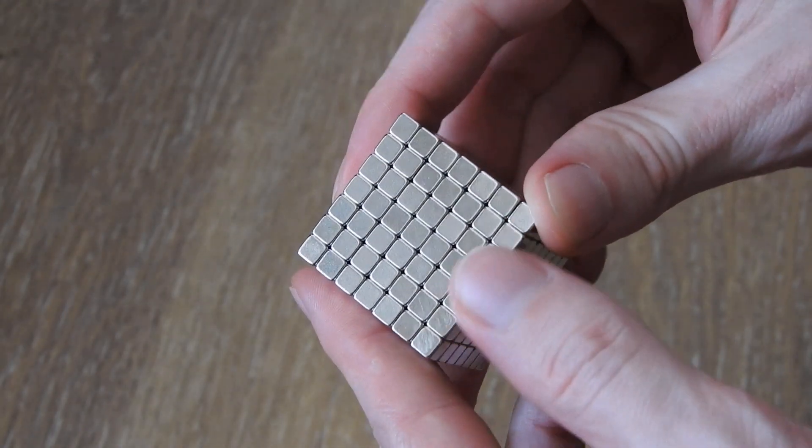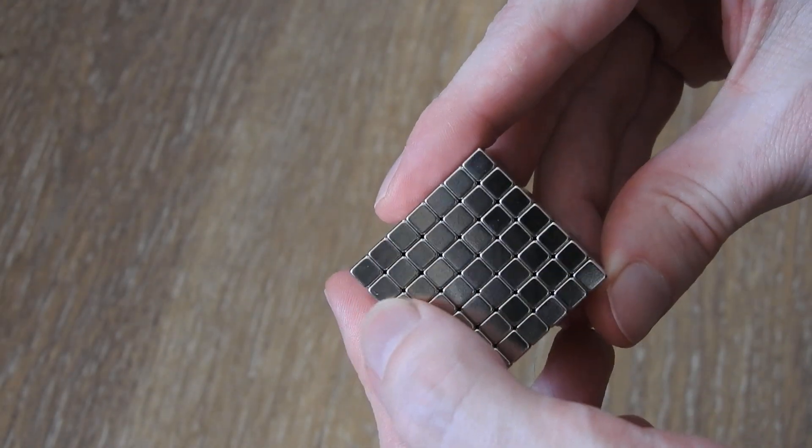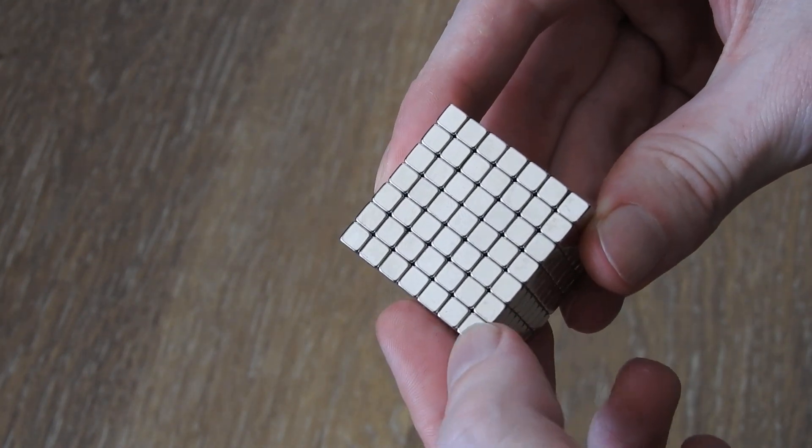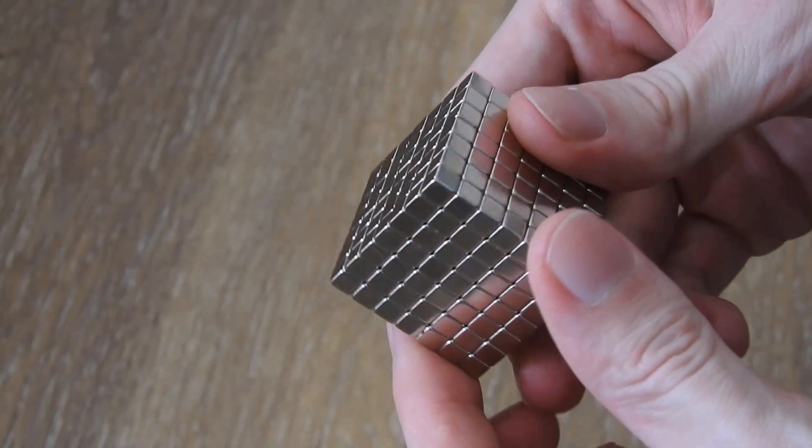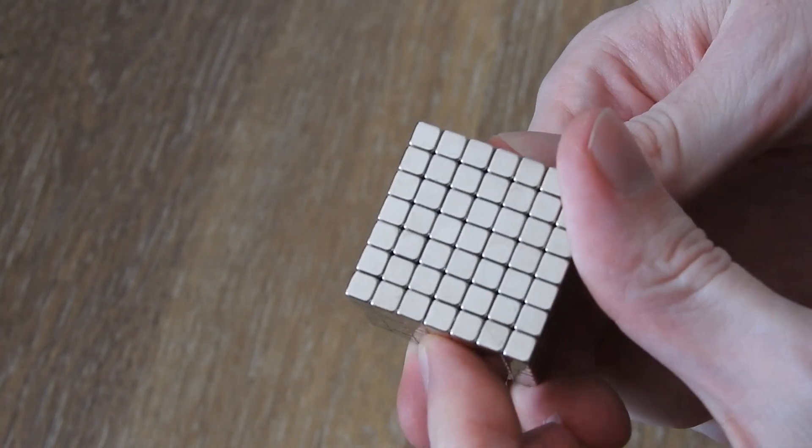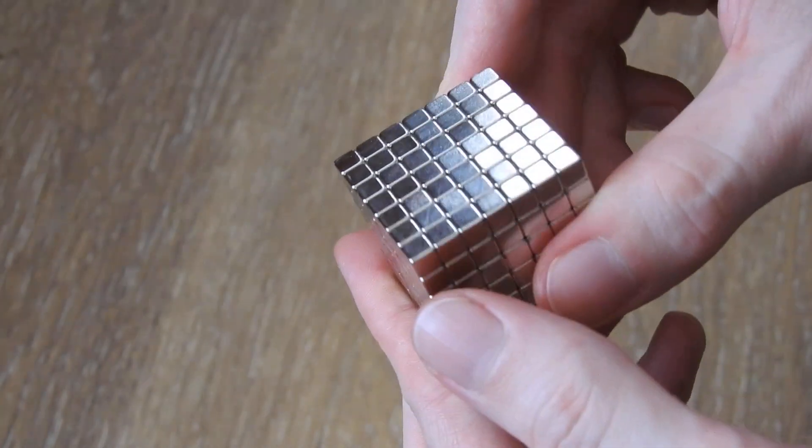In total these are 343 cube magnets. Each of them is 5 millimeter and these are N52 rated so they're the strongest you can buy at this size.